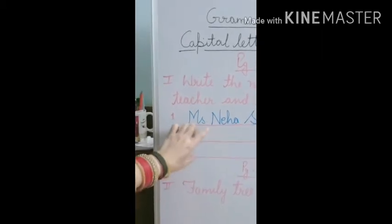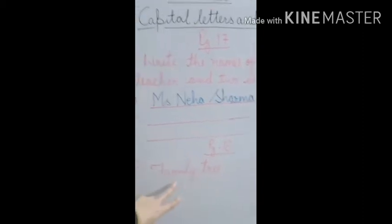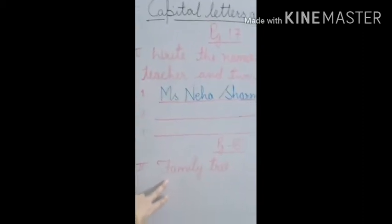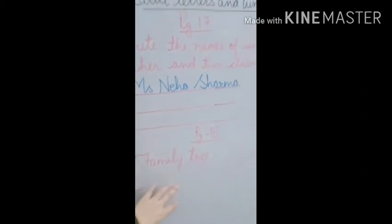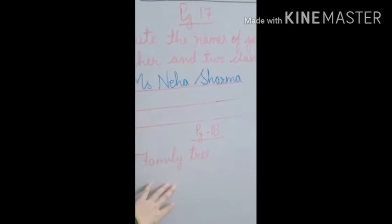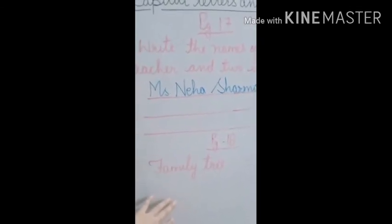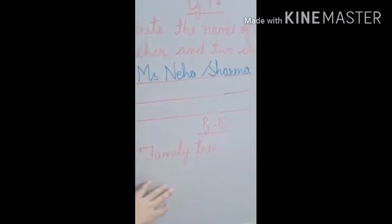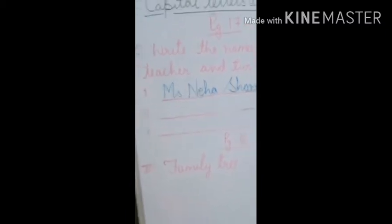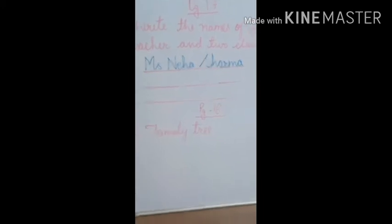On page 18, the second question is a family tree. Here you have to paste the pictures of your family members and write their names. This is your homework — you have to do it yourself. Write about your family members in this family tree.